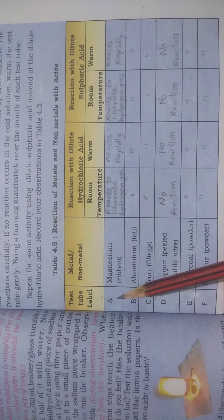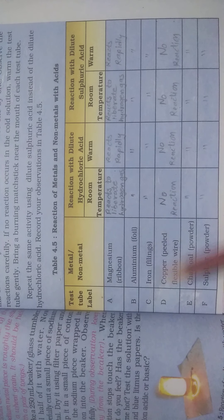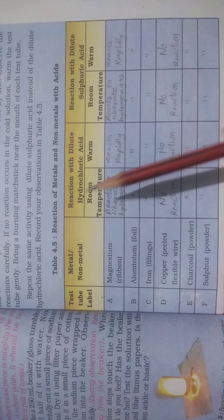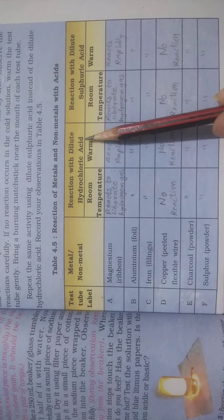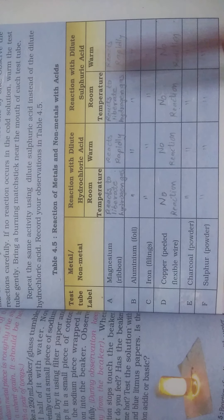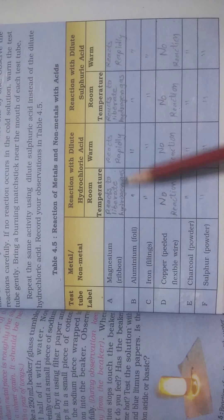Here is Table 4.5. Test tube A contains magnesium, B contains aluminium foil, C contains iron, D contains copper, E contains charcoal, and F contains sulfur in powder form. The reactions are observed with dilute hydrochloric acid first, then with dilute sulfuric acid, at room temperature and when warmed.